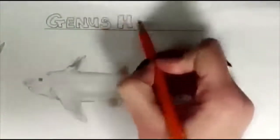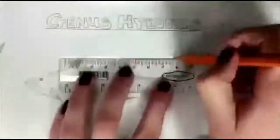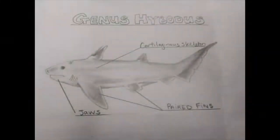Another shark that lived throughout the Permian-Triassic period, and by far the most successful, was the genus Hybodus — an extinct genus of Chondrichthyes, a class that consists of all cartilaginous fish. They have a cartilaginous skeleton instead of bone, are jawed vertebrates, and have paired fins.